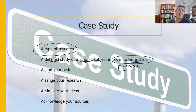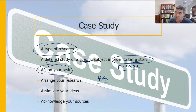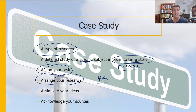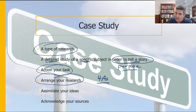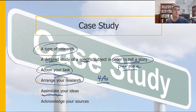Another way to think about case studies is as the four A's. First, action your task — figure out what you actually need to do. Second, arrange your research — don't pick just one source, supplement with multiple sources and check for consistency between them. Third, assimilate your ideas. Assimilation is like when you eat food and it becomes part of the chemistry of your body — you're actually taking ideas on and incorporating them into what's already there.